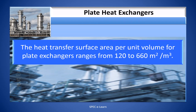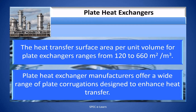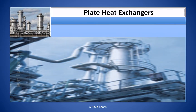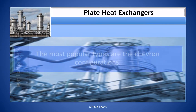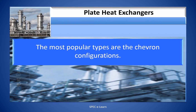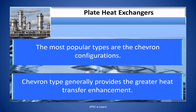The heat transfer surface area per unit volume for plate heat exchangers ranges from 120 to 660 m² per m³. Plate heat exchanger manufacturers offer a wide range of plate corrugations designed to enhance heat transfer. The most popular types are the chevron configurations, which generally provide the greatest heat transfer enhancement.